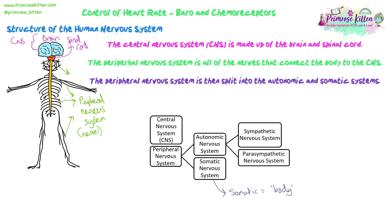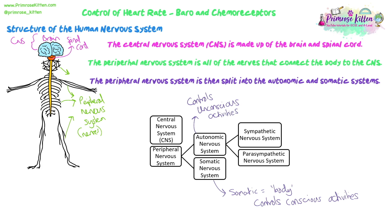Your peripheral nervous system is then split up into the autonomic and somatic nervous systems. Somatic just means body — it controls all your conscious activities: running, jumping, talking, eating — everything you think about and choose to do. Whereas your autonomic nervous system is controlling your unconscious activities that are subconsciously controlled — you don't think about them, they just happen on their own. Things like breathing, digestion, the peristalsis and movement of food through your digestive system, and your heartbeat.